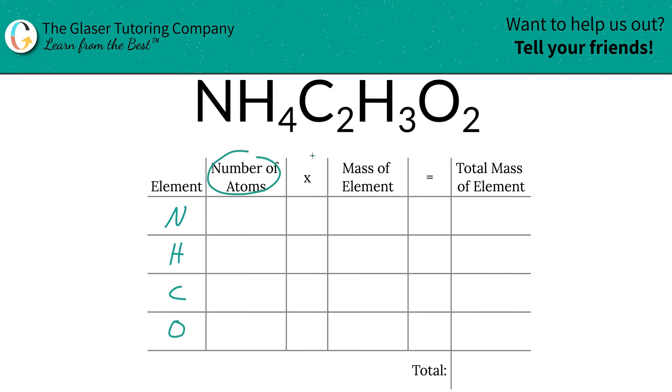Next is to write down the number of atoms of each. So in this compound, there's only one nitrogen. That's where the subscripts come into play. Hydrogen, on the other hand, you've got hydrogen in two spots. So to find the total, you just simply have to add up the number of hydrogen in each. So we've got seven hydrogens. Carbon is a two, so we've got two carbons, and then we've got two oxygens.